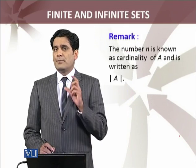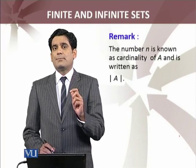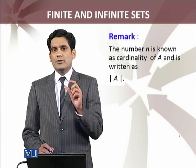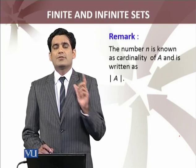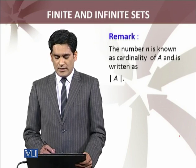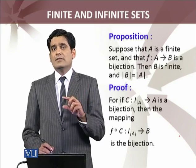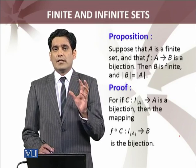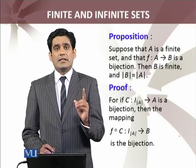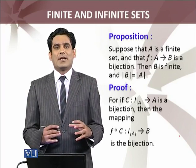Remark: this number n — we have proved that if A is a finite set then there is a bijection from the initial segment I_n to the set A. Is number n ko, jo initial segment ka natural number hai, is ko kehte hain the cardinality of the set — cardinality means the number of elements in a set. Next proposition: agar A is a finite set aur koi set B hai aur A se B pe bijection hai, then B is also a finite set and A and B have the same number of elements.